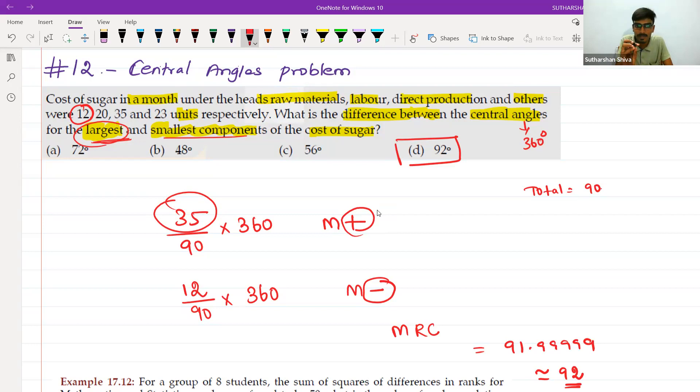What do you want to do? Higher number, larger number, total add. 35 divided by 90 into 360 M plus, press the largest number, smallest to minus. Then smallest number, divided by 90 into 360, M minus, MRC, memory recall, plus minus. Final answer is 92 degrees.